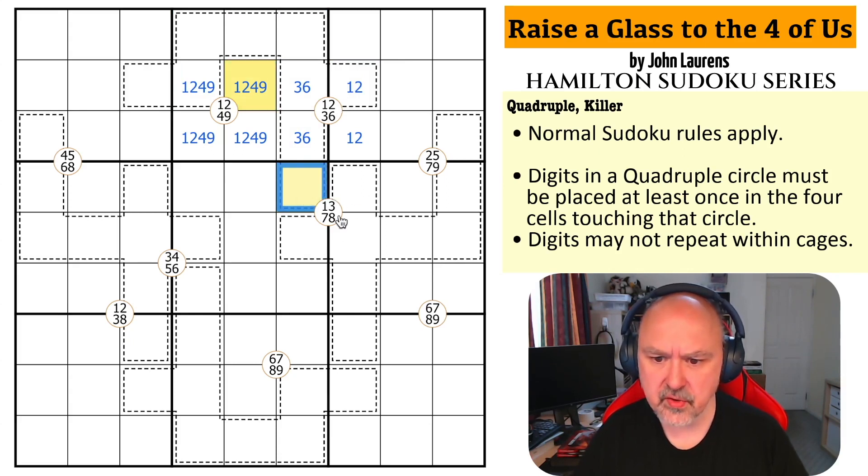So, this cell is the same as this. So, this is 1, 2, 4, or 9. And, it can't be 2, 4, or 9 because this is a 1, 3, 7, 8 quad. So, these are both 1. Which makes this 2 and this 1. That's really cool. I like that.